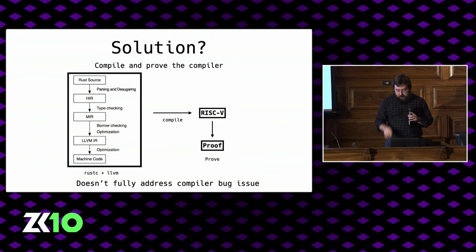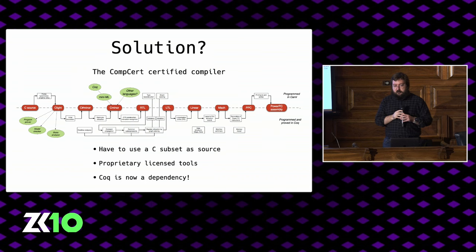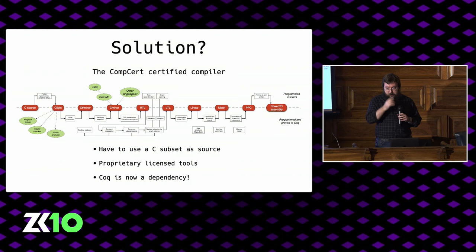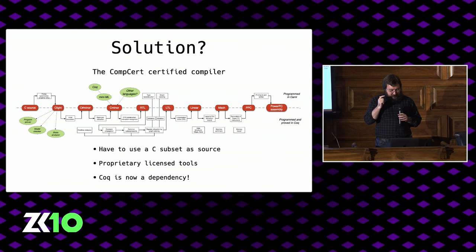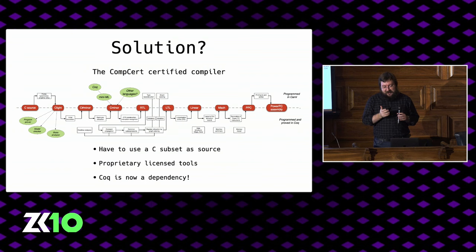We can solve the issue of compiler bugs with something called certified compilation. This is the architecture of a certified compiler called CompCert, implemented in the Coq theorem prover, which is a very complex piece of software. It does have a RISC-V backend. But no one really talks about it in this context because: A, it's not open source — you need a commercial license; B, you have to use a subset of C99 as your front-end language; and C, including Coq as a dependency in your project is something only crazy people do.